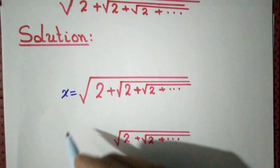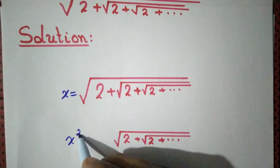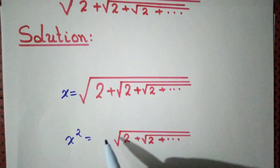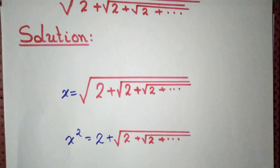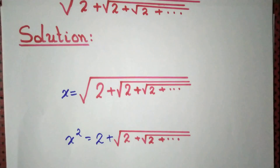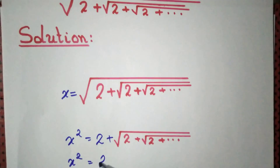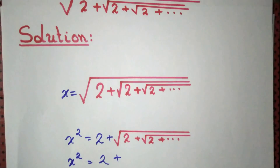Now if we square it, x squared, then root and square will get cancelled. So x squared will be equal to 2 plus root of 2 plus dot dot dot. Observe that x squared equals 2 plus this quantity, and this quantity is once again equal to x.